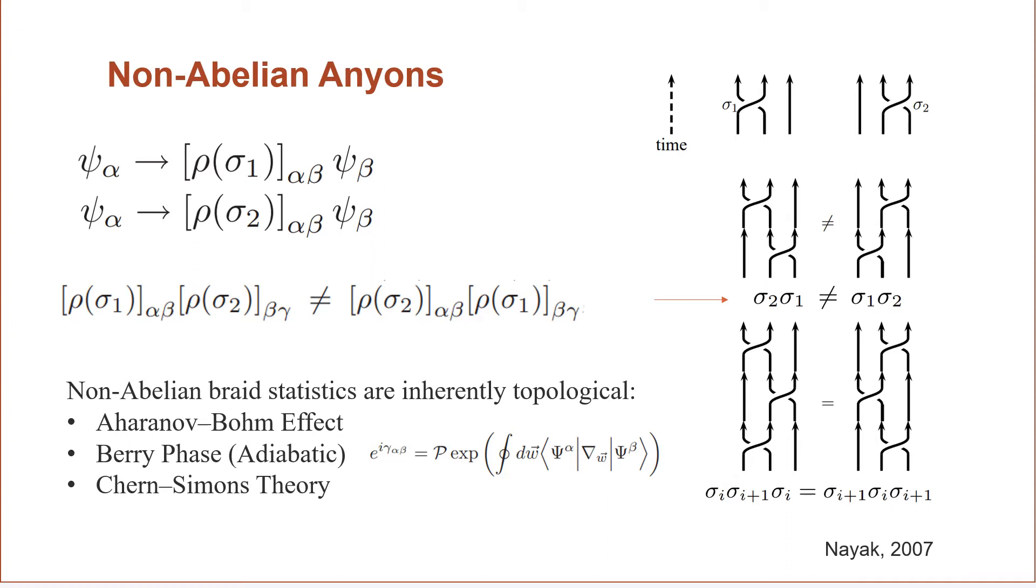This can be related to the Aharonov-Bohm effect, where the actual movement of the particle around a solenoid is not what is important. It is the final path or amount of looping around a solenoid that will affect the phase in the end. And so the change that happens between non-abelian anyons when braided is quite complex, but related to the Berry phase and that aforementioned adiabatic transformation and Chern-Simons field theory.